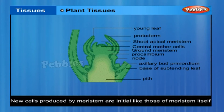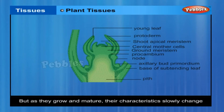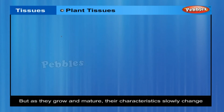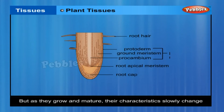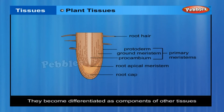New cells produced by meristem are initially like those of meristem itself, but as they grow and mature, their characteristics slowly change and they become differentiated as components of other tissues.